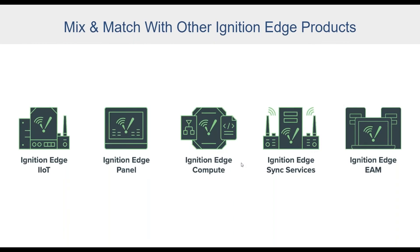One of my favorite Edge products is Ignition Edge EAM. Imagine you've chosen Ignition Edge Panel as your HMI and deployed 100 of them throughout a facility or across a wide area network. You need to apply license keys, do updates, monitor health, develop centrally, and push out changes to all of them at once. Edge EAM handles all of that. You install EAM on a central Ignition server with gateway network connections out to all your Edge panels, then use the EAM module to push licenses, take remote backups, push upgrades and project updates, and move tags.